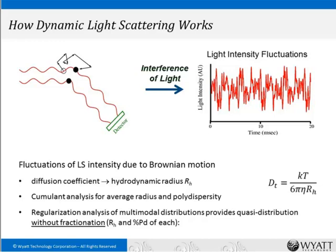Dynamic light scattering measures the rapid fluctuations in light intensity due to Brownian motion of particles in solution. The rate of fluctuation is converted to a diffusion coefficient, which through the Stokes-Einstein equation can be converted to a hydrodynamic radius RH. There are two analysis approaches: cumulant analysis, which gives an average radius and measure of polydispersity, and regularization analysis, which gives a quasi-distribution of sizes across the entire range without fractionation — really powerful, though not as quantitative as fractionation.